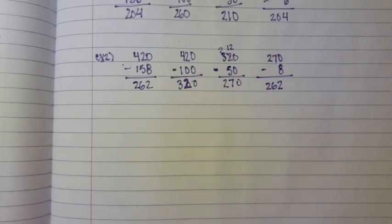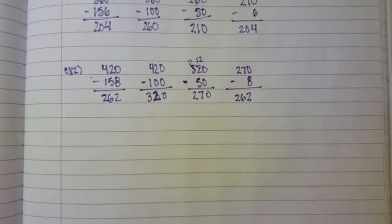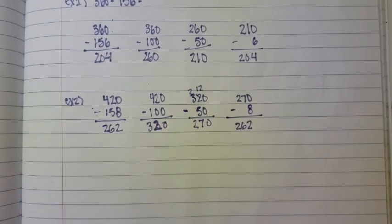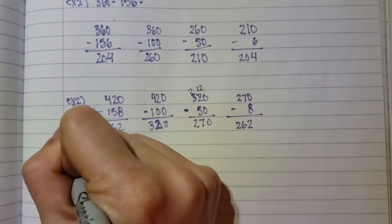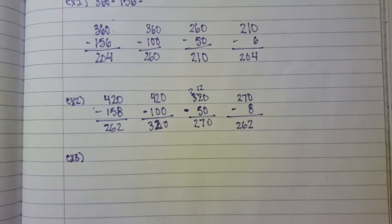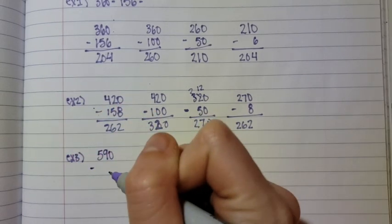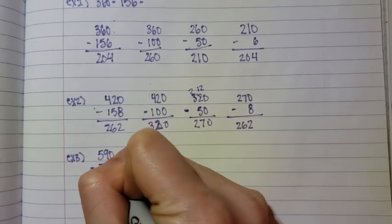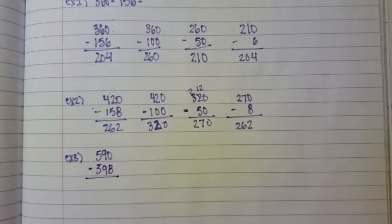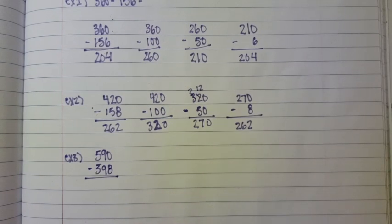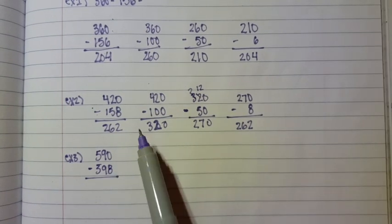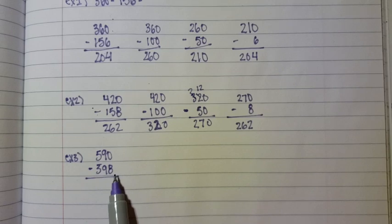Now, the last example that we are going to do is 590 minus 398. 590 minus 398, already written in standard notation. And then we are going to subtract from left to right.